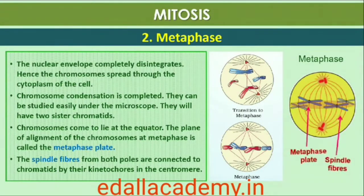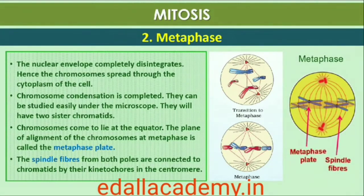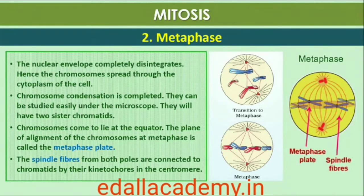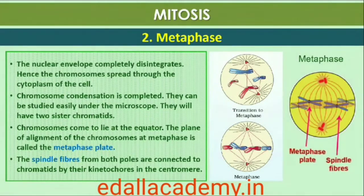Small disc-shaped structures at the surface of the centromeres are called kinetochores. These structures serve as the sites of attachment of spindle fibers to the chromosomes that are moved into position at the center of the cell. The metaphase is characterized by all chromosomes coming to lie at the equator, with one chromatid of each chromosome connected by its kinetochore to spindle fibers from one pole, and its sister chromatid connected by its kinetochore to spindle fibers from the opposite pole. The plane of alignment of chromosomes at metaphase is referred to as the metaphase plate. Key features: spindle fibers attached to kinetochores of chromosomes, and chromosomes aligned along the metaphase plate through spindle fibers to both poles.